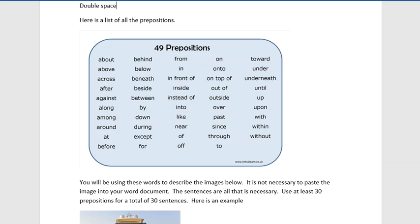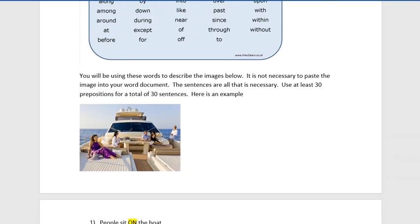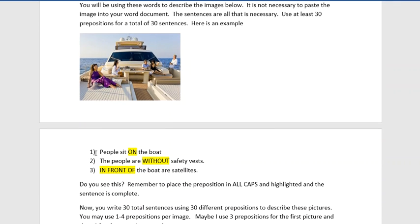Okay, so here is an example that I wrote for you. Let's take a look at this. What's going on here? Okay, so I've used a few of these 30 words to describe what's going on here. The people sat on the boat. The people are without safety vests. In front of the boat, right up here, are satellites.